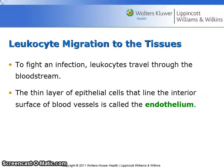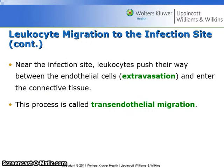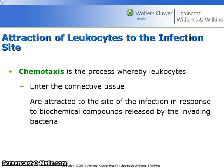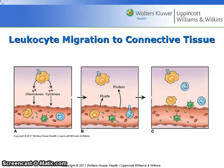To fight an infection, leukocytes travel through the bloodstream. The thin layer of epithelial cells that line the interior surface of blood vessels is called the endothelium. Near the infection site, leukocytes push their way between the endothelial cells and enter the connective tissue. This process is called extravisation, also known as transendothelial migration. Chemotaxis is the process whereby leukocytes enter the connective tissue and are attracted to the site of the infection in response to biochemical compounds released by the invading bacteria. See figure 8.9 on page 146 for more information.